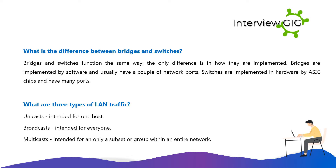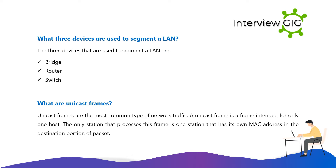The three types of LAN traffic are: unicasts, intended for one host; broadcasts, intended for everyone; and multicasts, intended for only a subset or group within an entire network. What three devices are used to segment a LAN? The three devices are bridge, router, and switch. What are unicast frames?